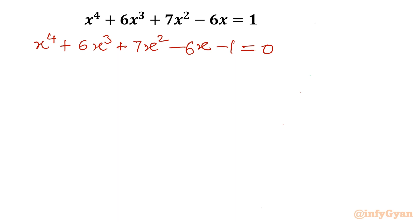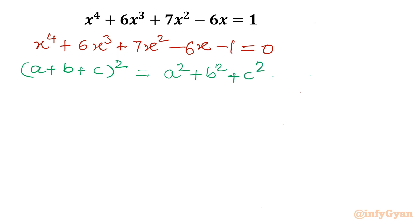Now I will write one algebraic identity which we will use here. That is the (a + b + c)² expansion formula: a² + b² + c² + 2ab + 2bc + 2ca. This identity is (a + b + c)².